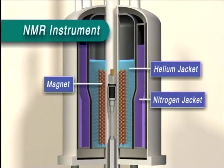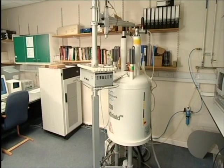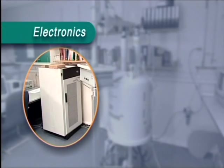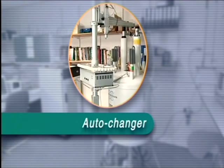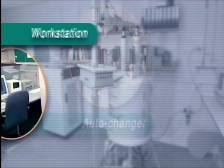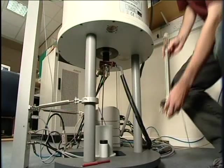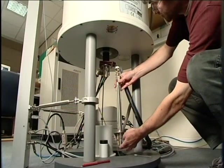The sample sits in the centre of the cylinder inside this probe, which contains the coils that send and receive the radio frequency signals. The electronics which generate and interpret the radio signals are housed in the boxes to the left. Samples are placed in the machine and removed from it by the auto-changer which takes the samples in turn from the carousel. The instrument is controlled from this workstation. This bare probe shows the radio coils and where the sample sits.